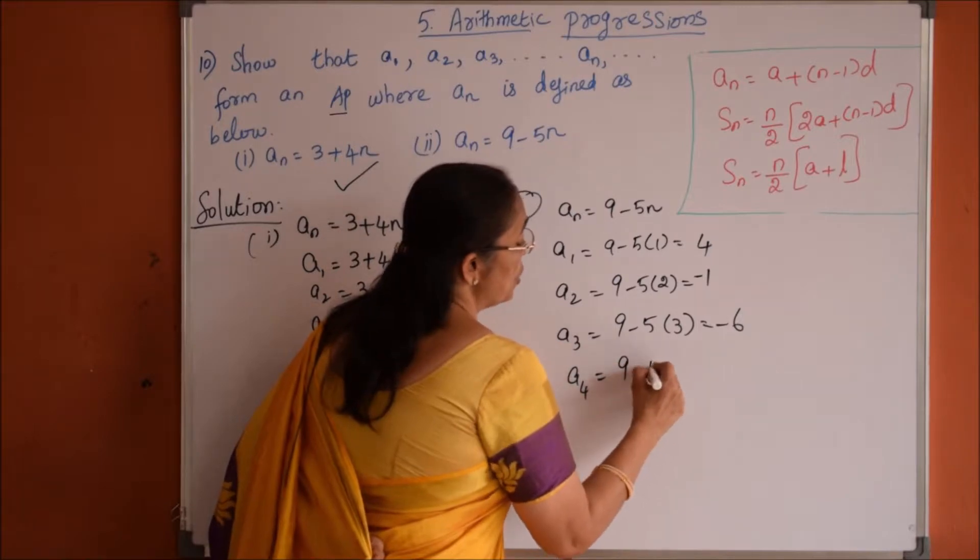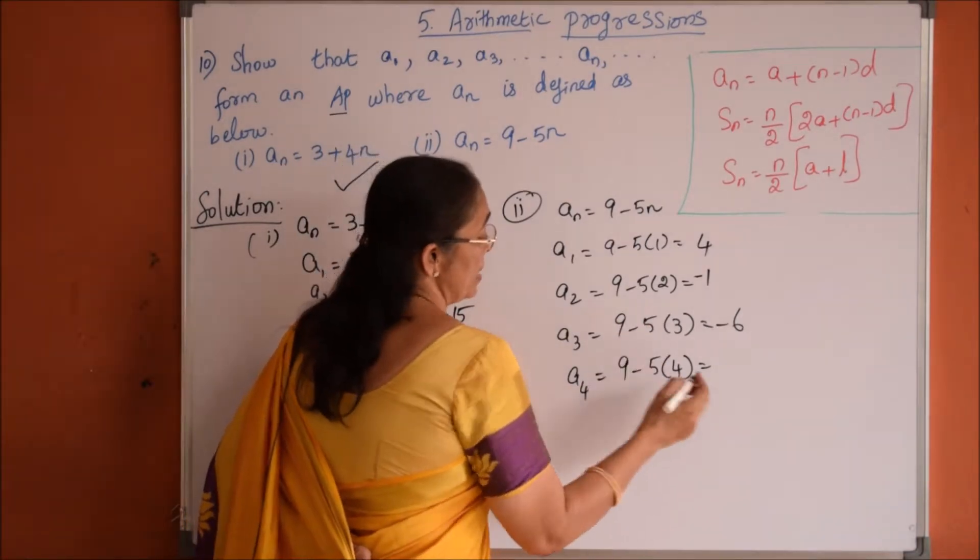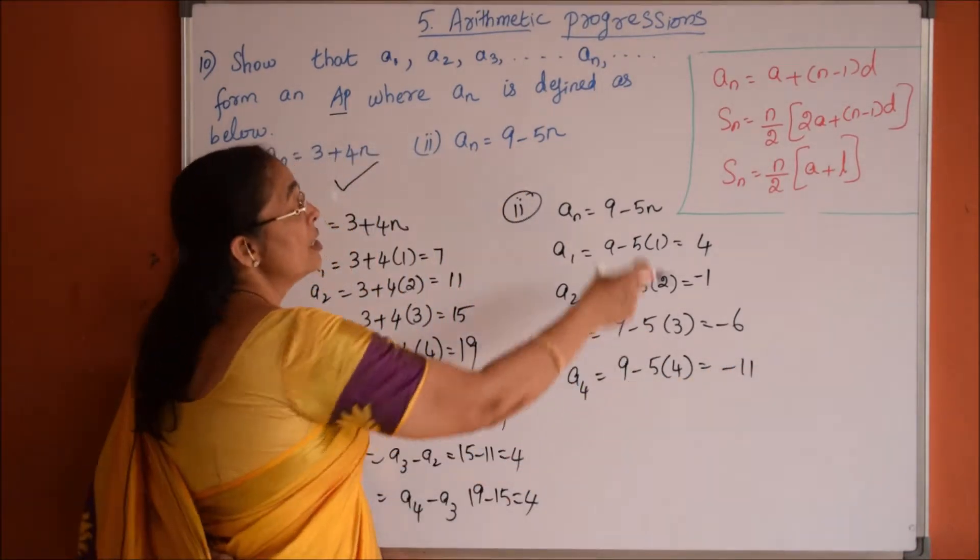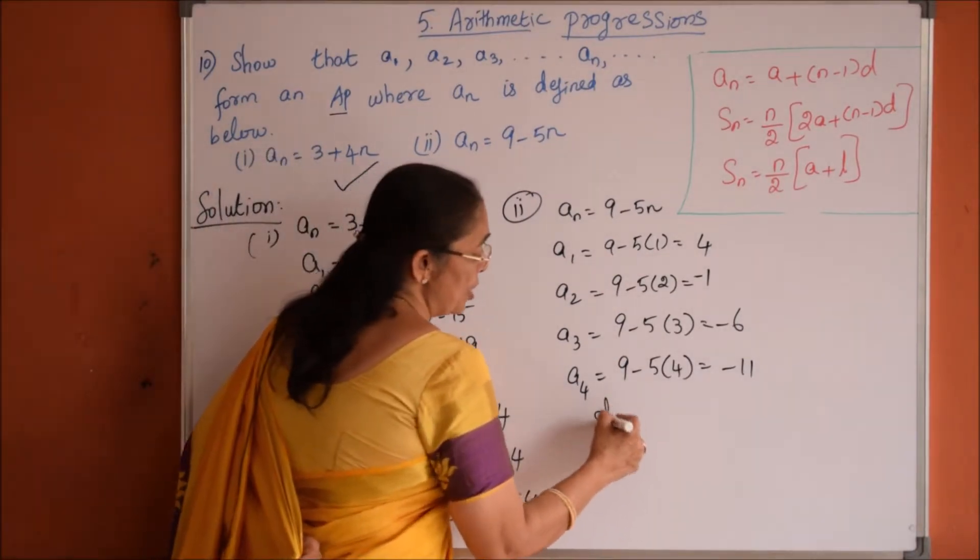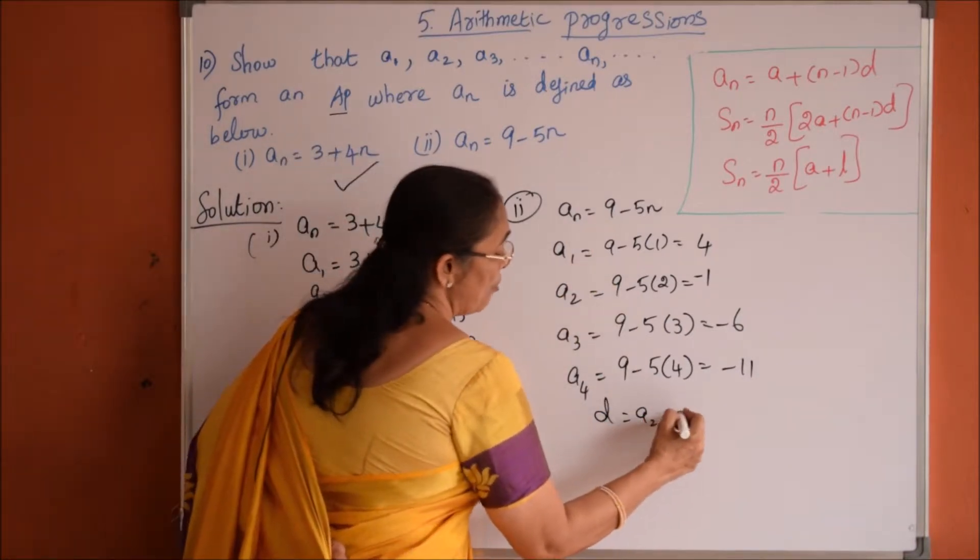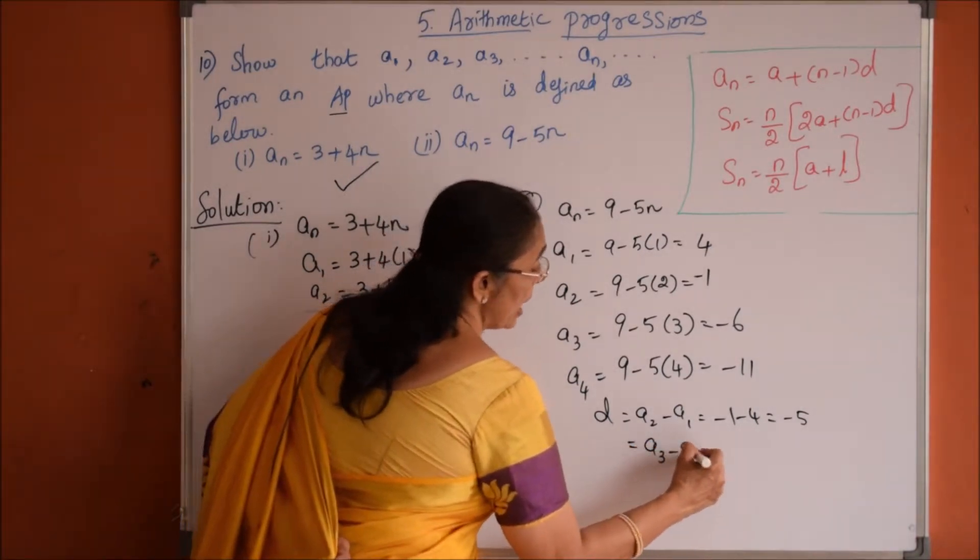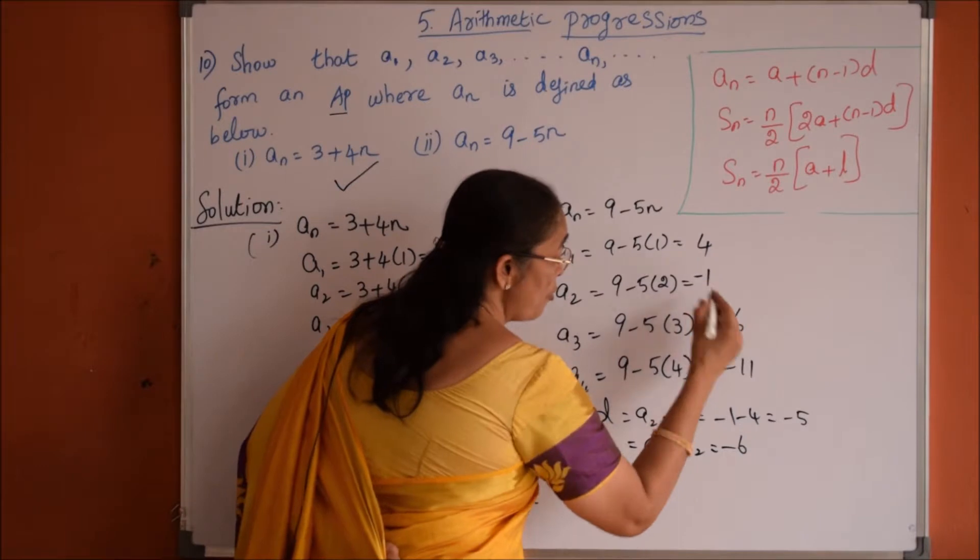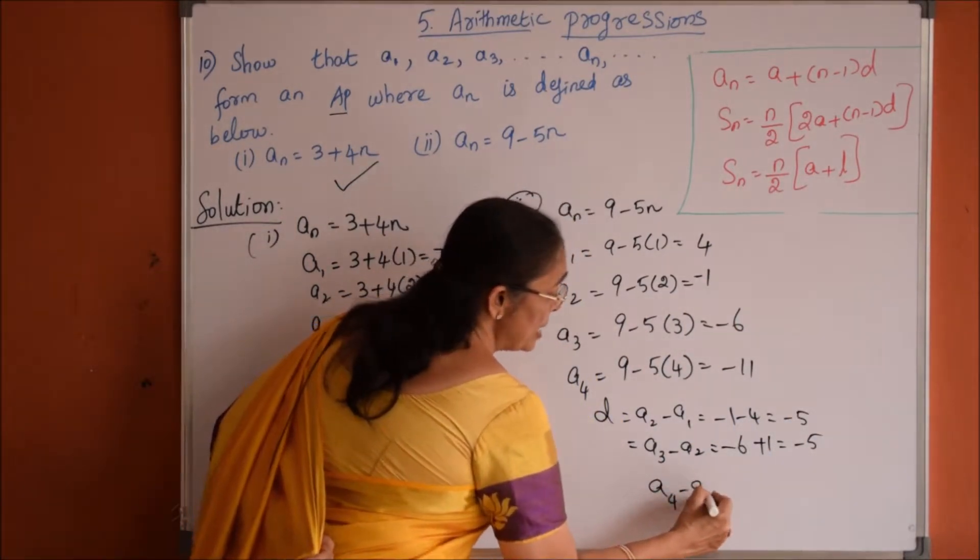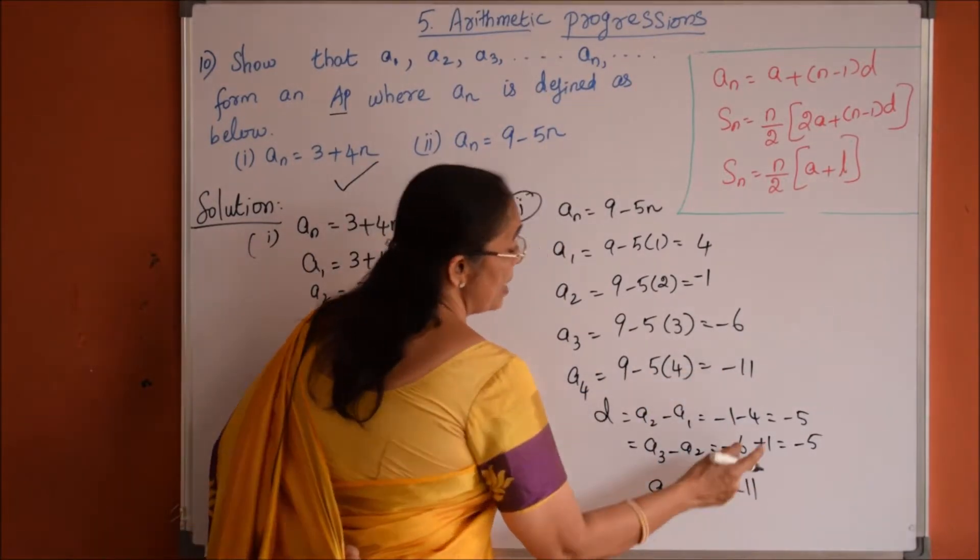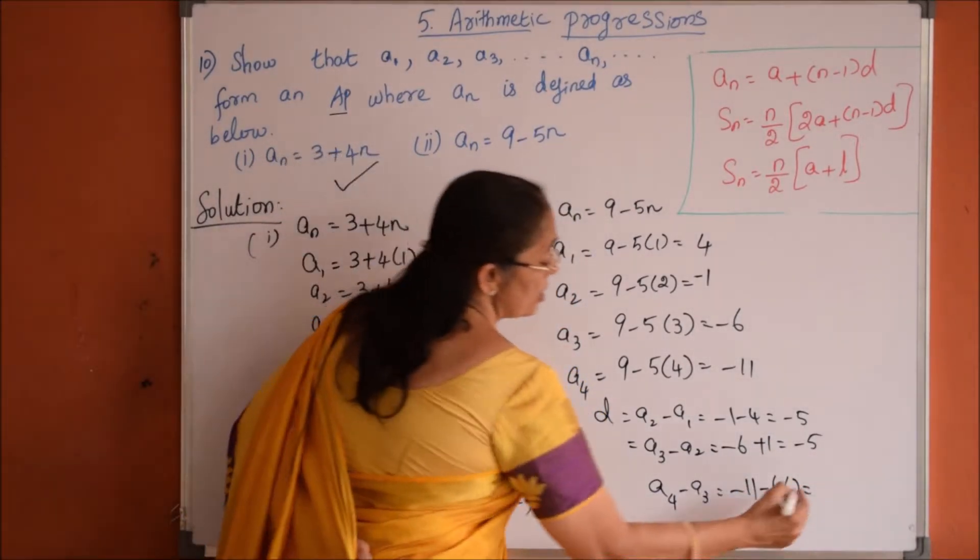a4 is equals to 9 minus 5 times of 4, 5 fours are minus 20, minus 20 plus 9, minus 11. Now let us check whether this list of numbers forming AP or not. Same procedure, the common difference should be same. So a2 minus a1 is minus 1 minus 4, minus 5. a3 minus a2, minus 6 minus of minus 1 which is plus 1, so minus 5. a4 minus a3, a4 is minus 11 minus minus 6, so which is plus 6, minus 11 plus 6, minus 5.